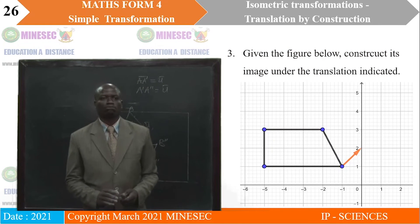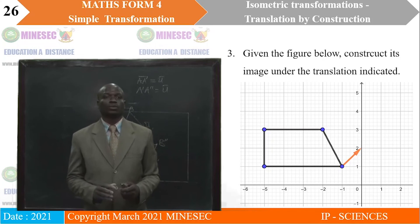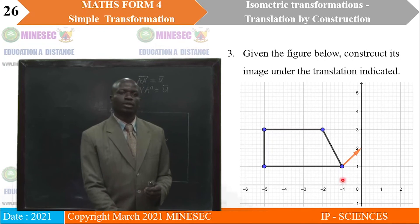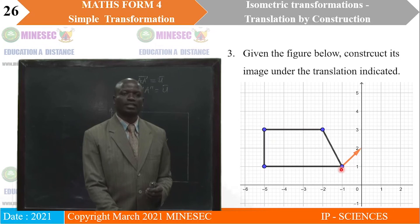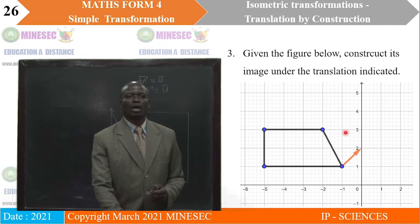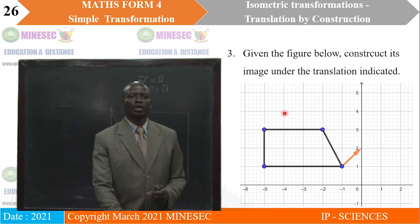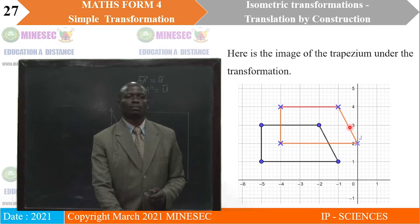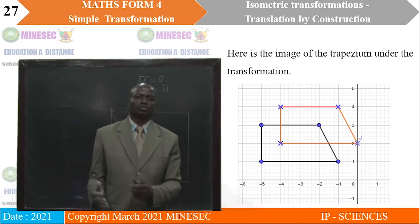Question 3: we have a trapezium to be translated. The translation vector shows one unit to the right and one unit up. Taking each vertex: one point moves to (0, 3), another to (4, -1), another to (4, -4), and the last to its corresponding new position. The trapezium image is shown in red at its new location.